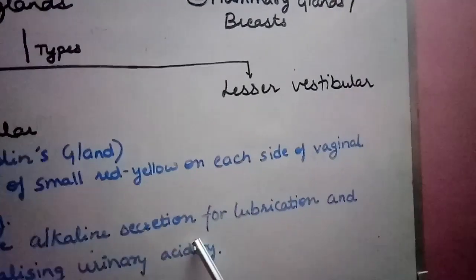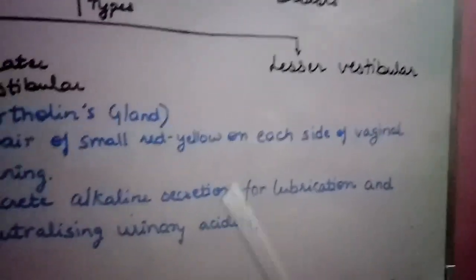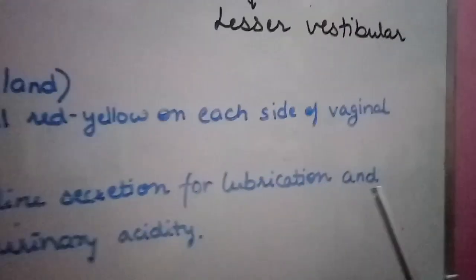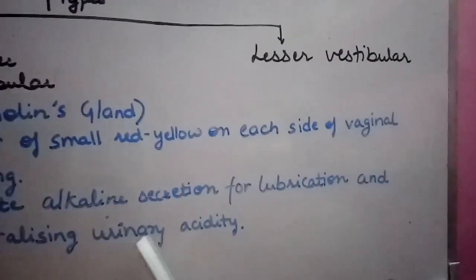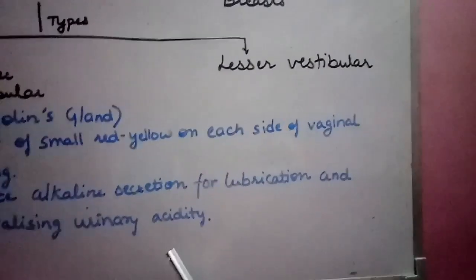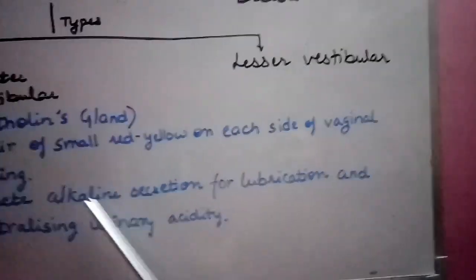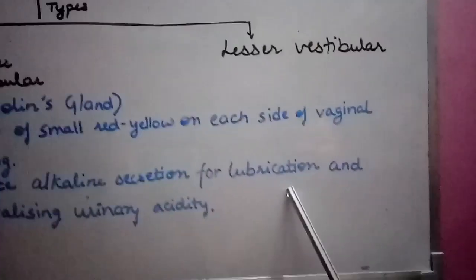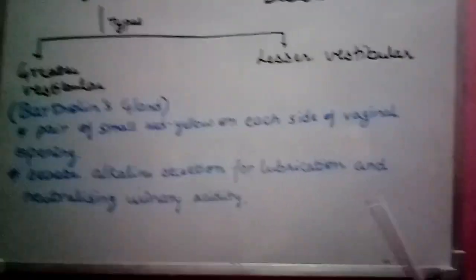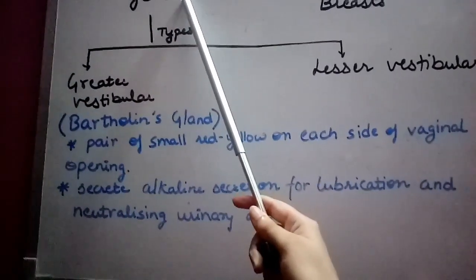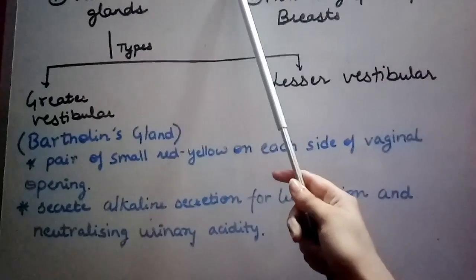The Bartholin gland secretes an alkaline secretion. This alkaline secretion provides lubrication to the vagina and also neutralizes urinary acidity — since urine is acidic in nature, the alkaline secretion helps neutralize it. This is the Bartholin gland, a subtype of the vestibular gland, which is an accessory gland of females.